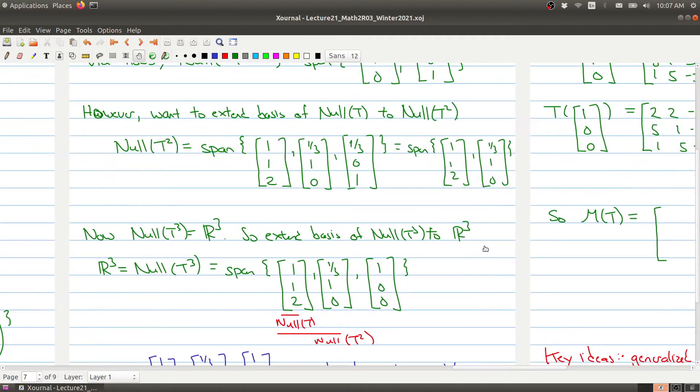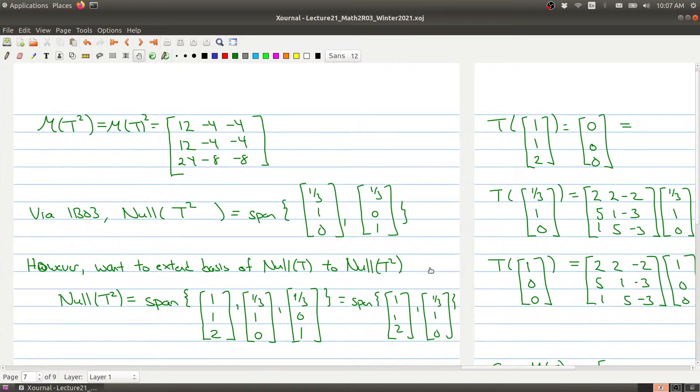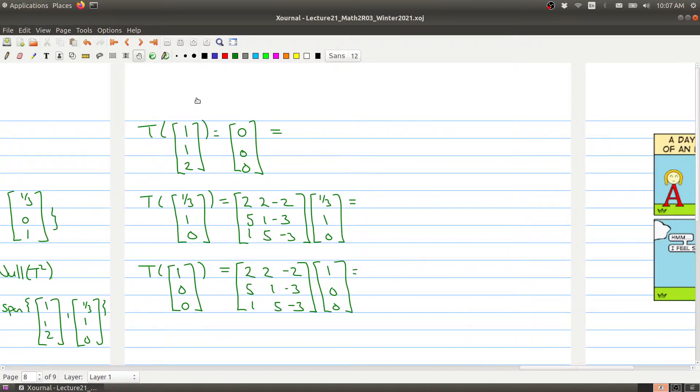And so let me show you how we get the associated matrix. So when we plug in each of these vectors into our operator t, the first one will give us 0, 0, 0. And if we write everything with respect to our basis, we get 0 times the vector 1, 1, 2, plus 0 times the second basis vector, which is 1, 1/3, 1, 0, and 0 times the last vector, which is 1, 0, 0.